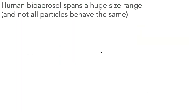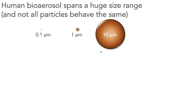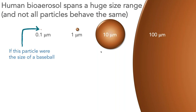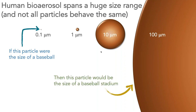Human bioaerosol — particles that come out of our body — span a huge size range, and not all of these particles behave the same. A 0.1 micron particle is very tiny. A 1 micron particle is 10 times larger, a 10 micron particle 10 times larger than that, and then a 100 micron particle. If this tiny 0.1 micron particle were the size of a baseball, the 100 micron particle would be the size of a baseball stadium. We're dealing with massive variation in size when thinking about aerosols.